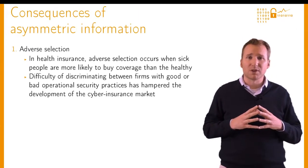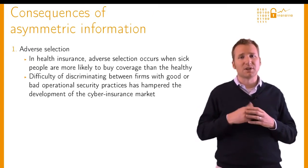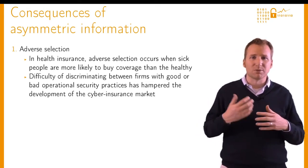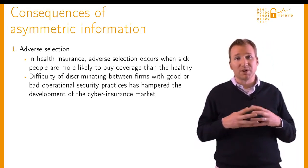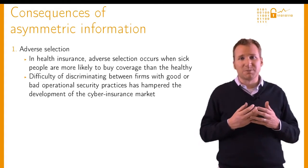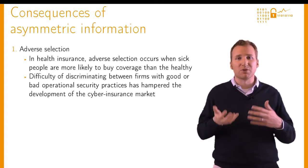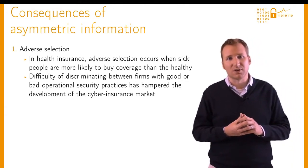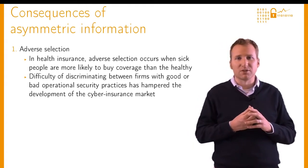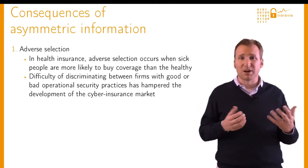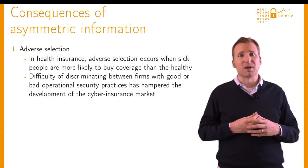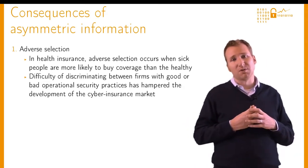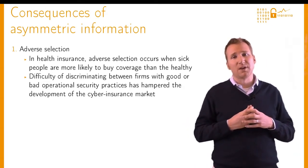So what are the consequences of markets with asymmetric information? There are two classical outcomes: adverse selection and moral hazard. Adverse selection occurs in health insurance markets when sick people are more attracted to buying policies than healthy people because they stand to gain more. This is bad because the pool gets overloaded with sicker people, which drives up premiums and drives out healthy patients. We see this play out in the cyber insurance market, where it's very difficult for an underwriter to discriminate between firms based on their operational security practices — bad firms are more likely to buy cyber insurance, which could trigger higher premiums and lower participation.